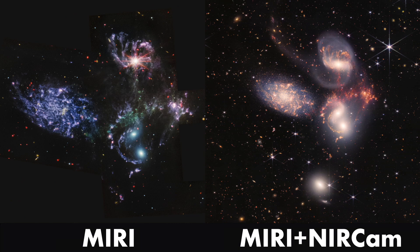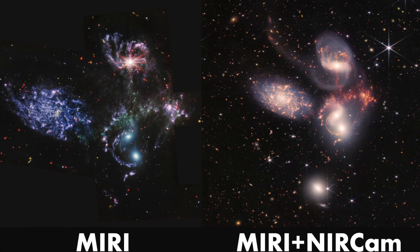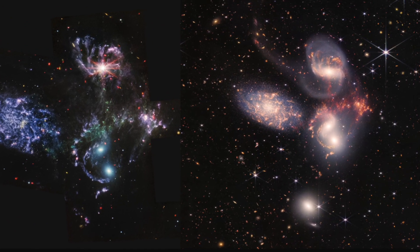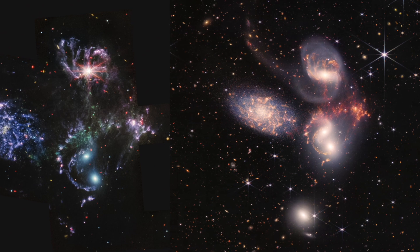Four of the five galaxies that make up the Quintet — NGC 7317, NGC 7318a, NGC 7318b, and NGC 7319 — are in close proximity to each other by astronomical standards, at 290 million light-years away. The leftmost galaxy, NGC 7320, is 250 million light-years closer to Earth than the others. This region is important to document because it allows us to investigate how galaxies interact with one another, including how star formation is stimulated and dust is distributed.